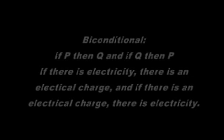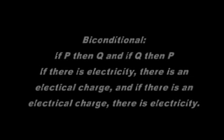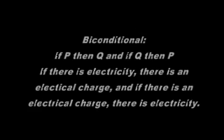Biconditional propositions have this form: if P, then Q, and if Q, then P. For example, if there is electricity, then there is an electrical charge. And if there is an electrical charge, there is electricity.